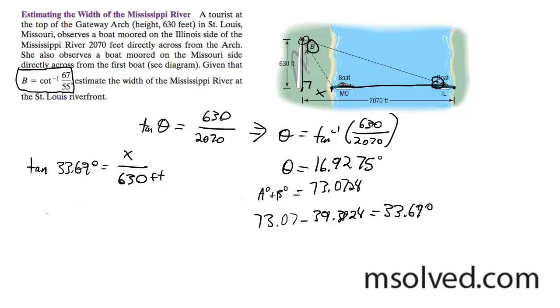Now what happens here is x is going to be equal to tangent of 33.69 degrees times 630 feet. I calculate that and I end up with my x value being equal to 419.9989 feet, or just 420 feet.